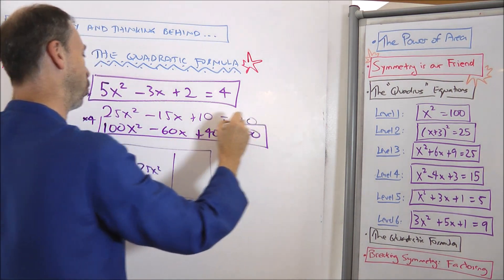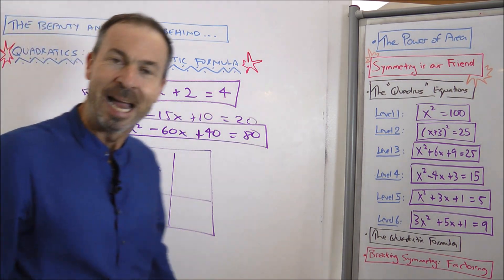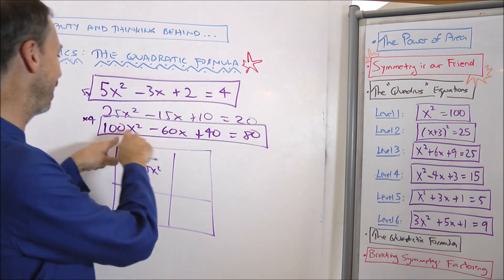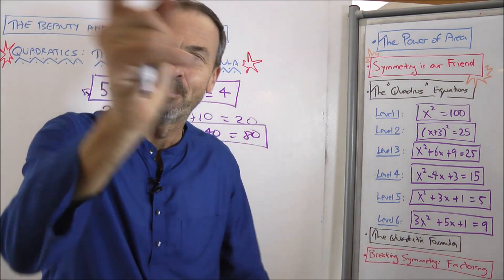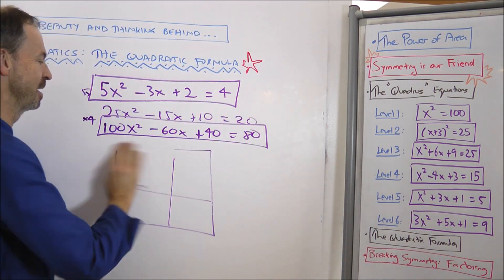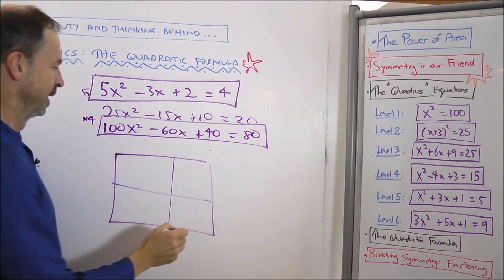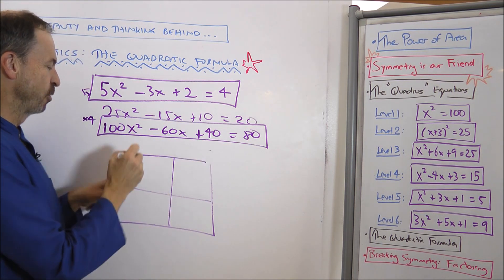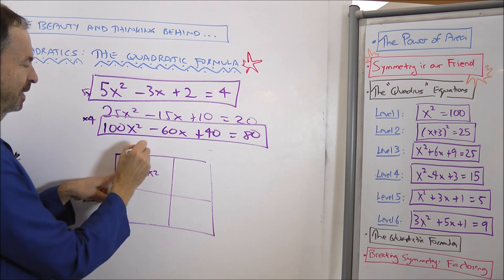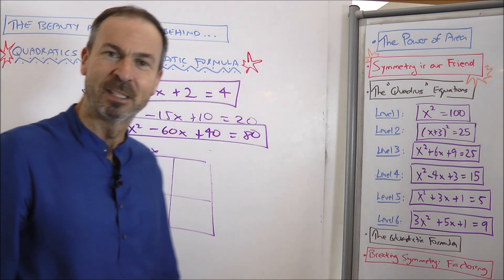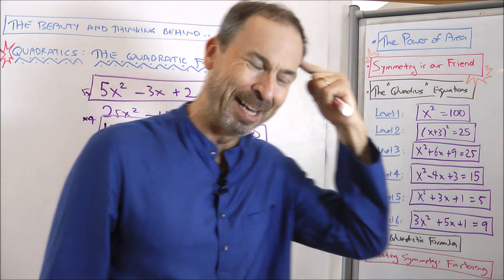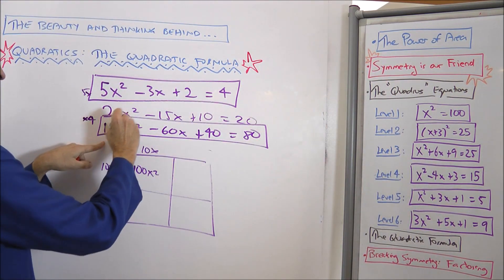Now doubling wasn't quite enough. Multiplying by 4 was good because it keeps the number in front a square number. 100x squared minus 60x plus 40 equals 80. So let's solve that equation instead, which I know seems absurd because I've just made the numbers huge. But the point is, it's made the picture nice. So here's my picture. 100x squared. Lovely. Must come from 10x and 10x.